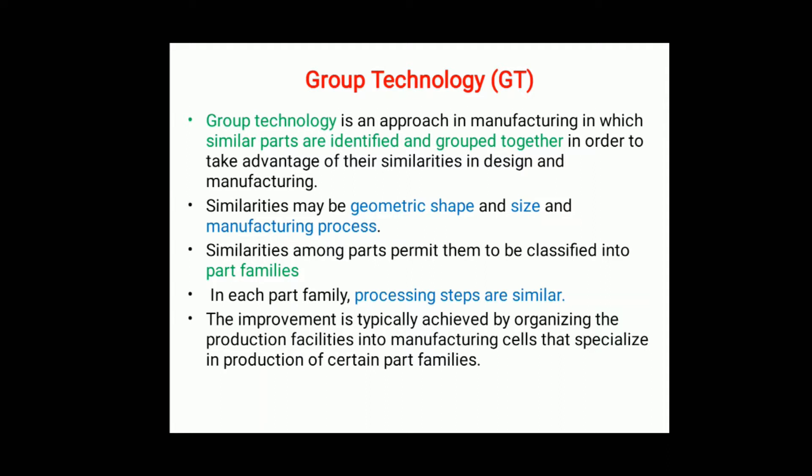Basically, in group technology we form a group using geometrical shape, size, and manufacturing process. For example, out of ten parts, five parts having the same geometrical size and shape form one group, and the remaining five with the same manufacturing process form a second group. We make different groups for further manufacturing purposes. Similarities among parts permit them to be classified into part families.